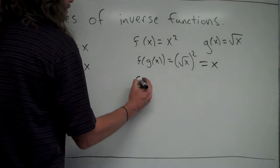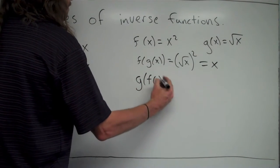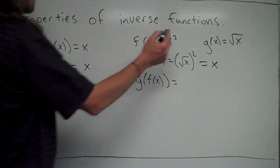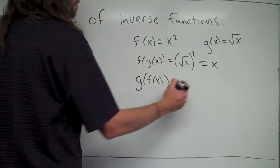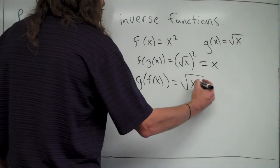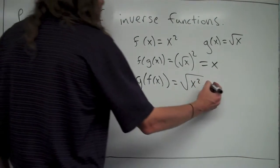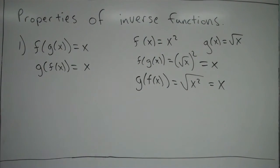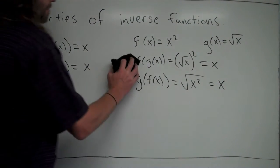Let's check this one. So g of f of x - for this one we're going to take f of x and put it into the function g of x where we see x. So it's going to be square root of x squared, and square root of x squared is just equal to x. So it does meet this first criteria here. So far we're looking good.